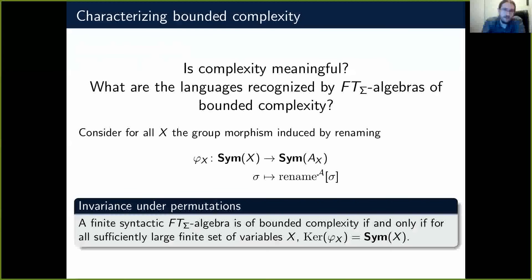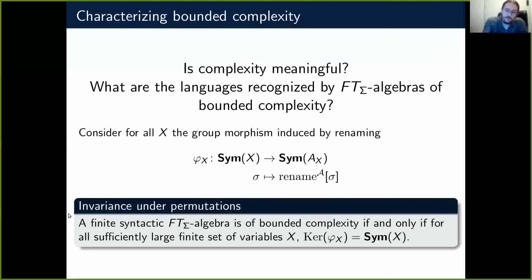Consider for all X the group morphism phi_X induced by renaming. We start with some renaming sigma in the symmetry group of X, and map it to the operation rename_sigma, which is in the symmetry group of A_X. We proved a result of invariance under permutation: the finite syntactic algebra is of bounded complexity if and only if, for all sufficiently large finite sets X, the kernel of phi_X is exactly the entire symmetry group.